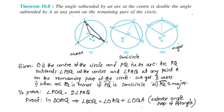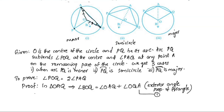This is equation number 1. In triangle OAQ, OA is equal to OQ because they are radii of the same circle.